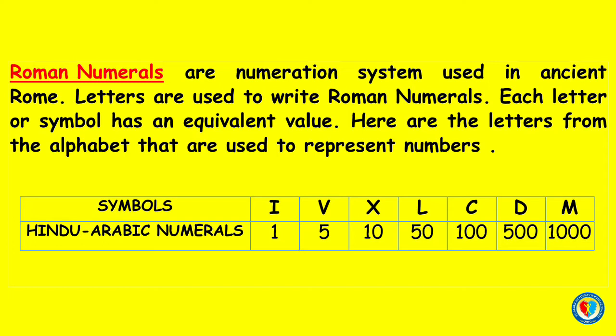Here are the letters from the alphabet that are used to represent numbers. The symbol I is equal to 1, V is equal to 5, X is equal to 10, L is equal to 50, C is equal to 100, D is equal to 500, and M is equal to 1000. These letters are put together to write different numbers.